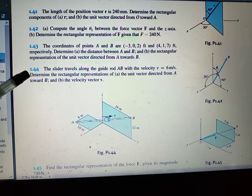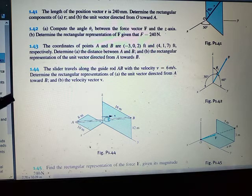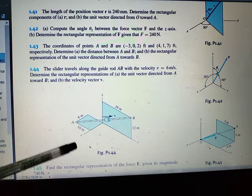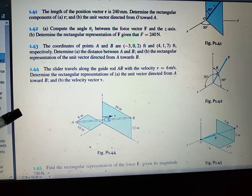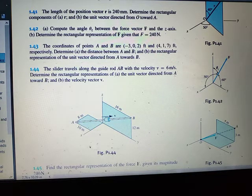So the slider travels along the guide rod AB with the velocity V equal to 6 meters per second. Here, determine the rectangular representations of the unit vector directed from A towards B and the velocity vector V. So this is the problem and this is our figure.